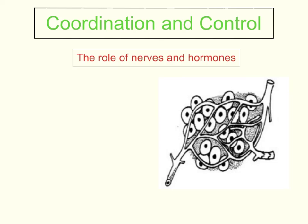Hi everyone, this is Coordination and Control Part 1, which is all about the role of nerves and hormones. Nerves and hormones are the two different types of messages used in living things, and we're going to look at why they are necessary and what they do.